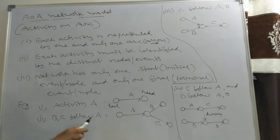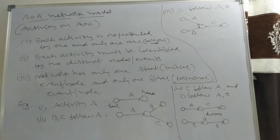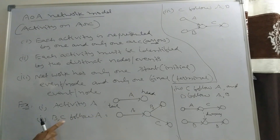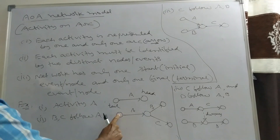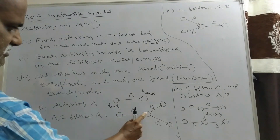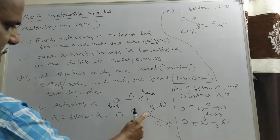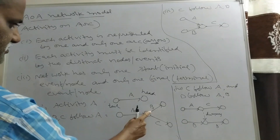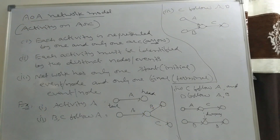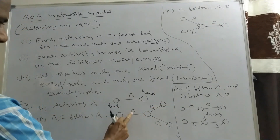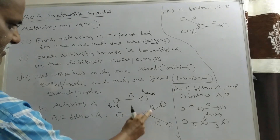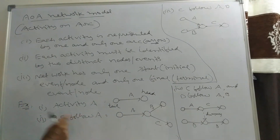Second example: B and C follow A, meaning after completion of A, both B and C start. A is a predecessor to B and C. To draw this, first draw A; the head event represents completion of A. From that node, B starts and C starts.